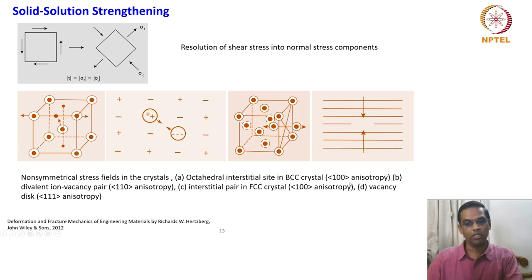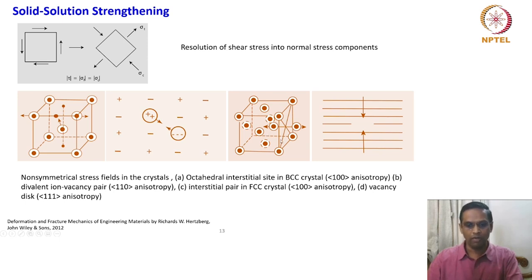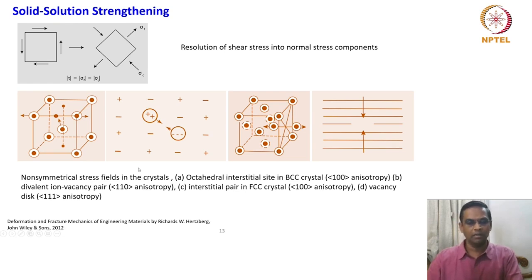These are classical examples of non-symmetrical stress fields. The BCC lattice with carbon as an interstitial exhibits anisotropy in 100 and 110 directions. The divalent ion-vacancy pair shows anisotropy in the 110 direction. The interstitial pair in FCC crystal exhibits anisotropy in the 100 direction. A vacancy disc exhibits anisotropy in the 111 direction. These are all classical examples of how a crystal system has non-symmetrical stress fields and how they interact with the stress fields of dislocations with profound influence.